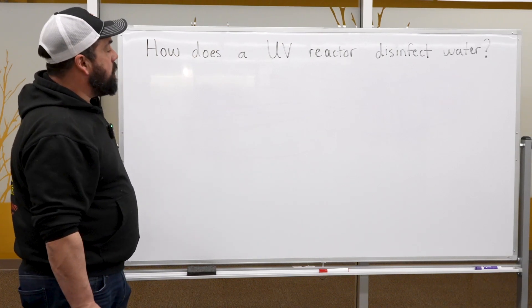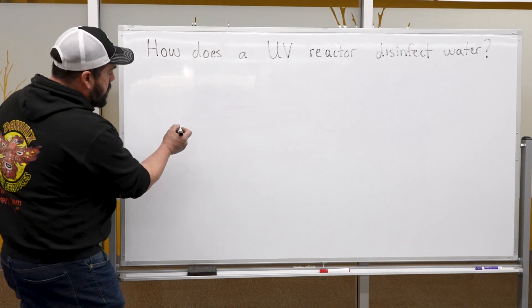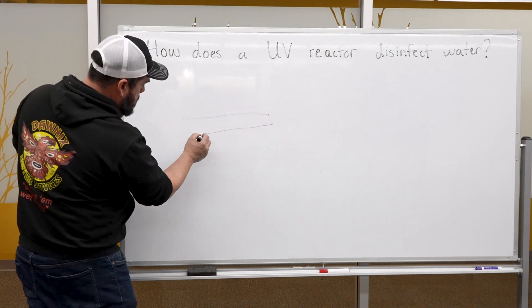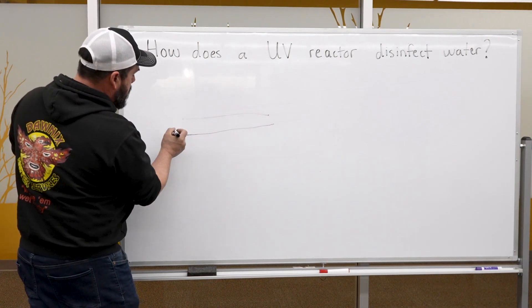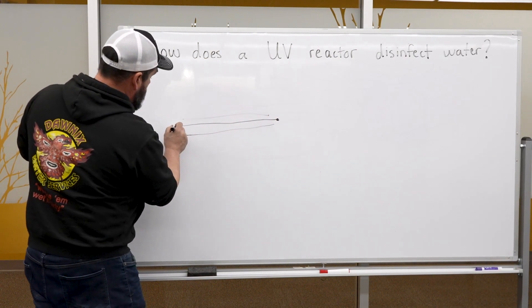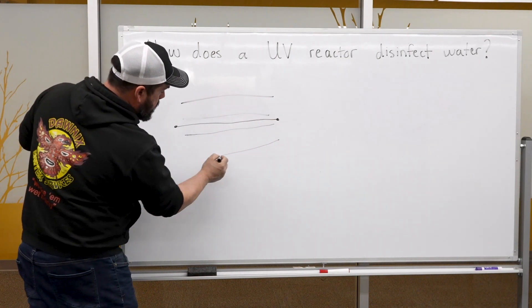How does a UV reactor disinfect water? A UV reactor consists of a quartz sleeve with a light bulb that goes through the center of this quartz sleeve with a mirrored exterior body on the outside of it.